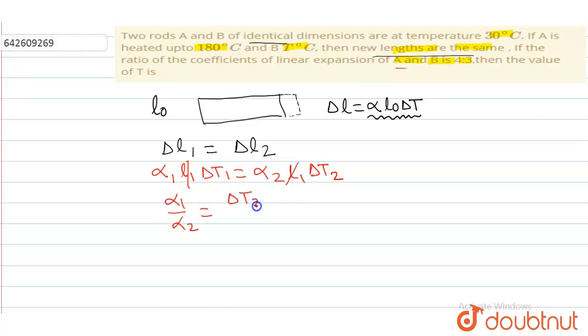linear expansion of A to B is 4 by 3. It means alpha 1 by alpha 2 is equal to delta t2 by delta t1.